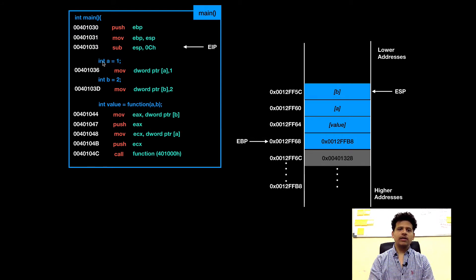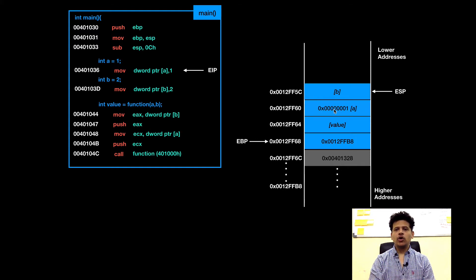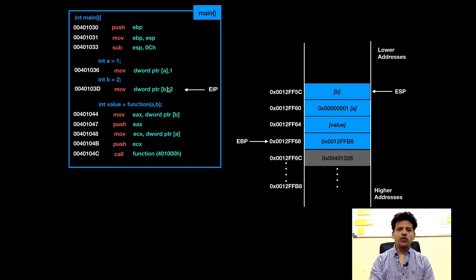Next C statement is integer a equals 1. For that, 1 will get moved into the address pointed by pointer a. 1 got moved into the address pointed by pointer a. Next C statement is integer b equals 2. For that, 2 will get moved into the address pointed by pointer b. Address pointed by pointer b is 0012FF50 and 2 will get moved there. It got done.